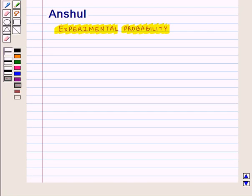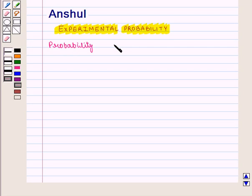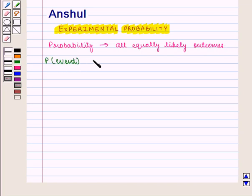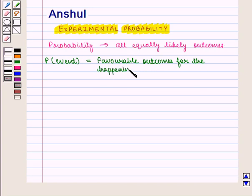Hello and welcome to the session. In this session, first we shall study about experimental probability and then we shall learn how we can make predictions with the help of given probability. We know that probability is always written in fraction and we take all equally likely outcomes. Probability of an event is given by favorable outcomes divided by total number of outcomes.